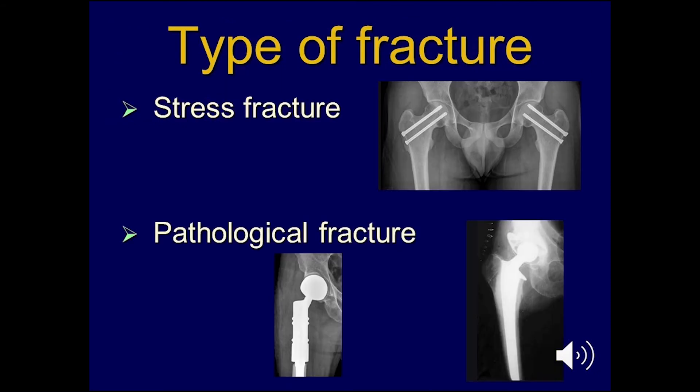The type of fracture is also quite important. For example, a bilateral stress fracture is ideally managed by fixation — the gold standard for such cases. In pathological fractures, management depends on the type of pathology and extent of disease: you may replace the whole upper femur, or if the condition allows, use a cemented prosthesis.